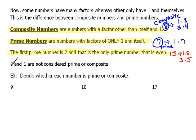Alright, another note before we move on. 0 and 1 are not considered prime or composite. They are neither.